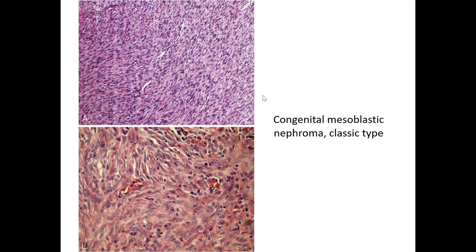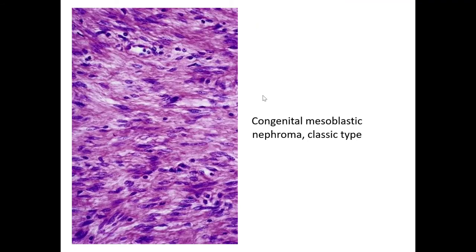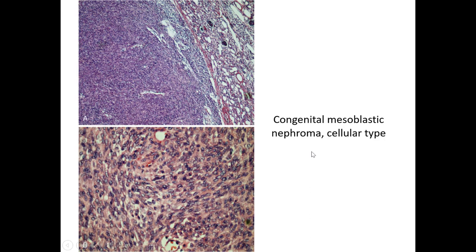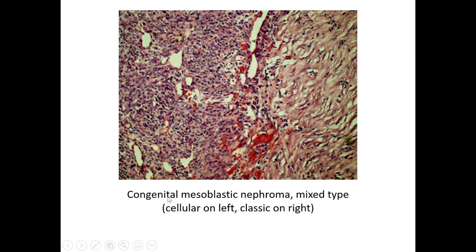Here are two examples of congenital mesoblastic nephroma of the classic type. At higher power, the cells appear fibroblastic, meaning they have tapering nuclei and tapering cytoplasmic processes. Here's an example of the cellular type, which is just more cellular, with less of a tapering or fibroblastic appearance. And then you may see cases of the mixed type, where it's cellular in one region and less cellular in another.